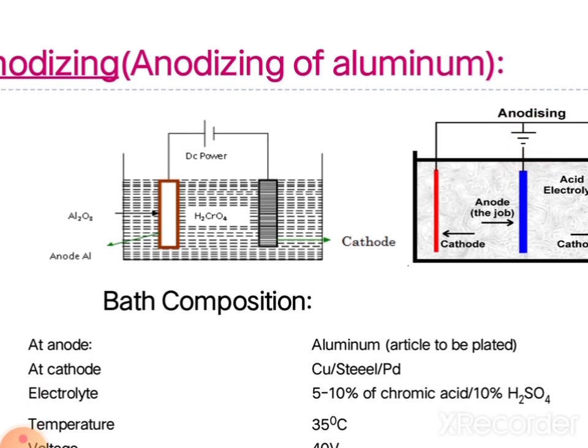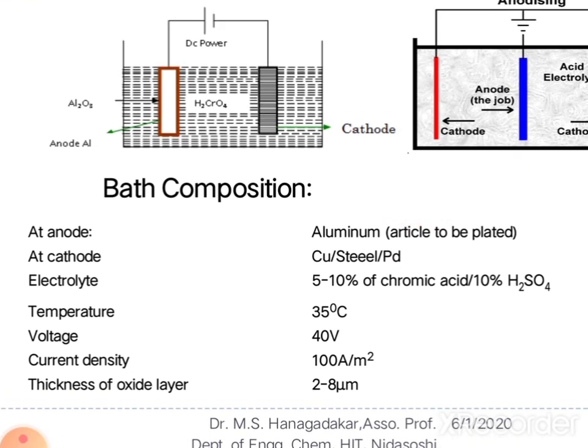The cathode may be a material other than aluminium — such as copper, steel, or palladium. After supplying power, oxidation takes place at the anode side and reduction takes place at the cathode side. As a result, oxygen is released and it is trapped on the aluminium substrate surface, leading to the formation of aluminium oxide.